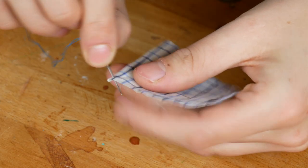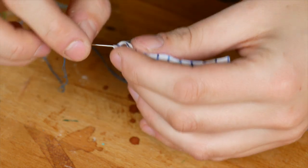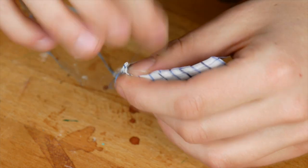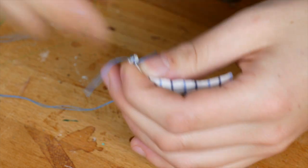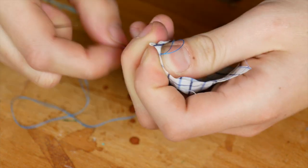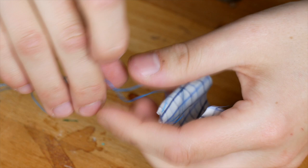Fold the strip over and sew one side together. Your father or mother, grandfather or grandmother, or another adult can probably help you with this. Otherwise you can always look up a YouTube tutorial. I will link one below.